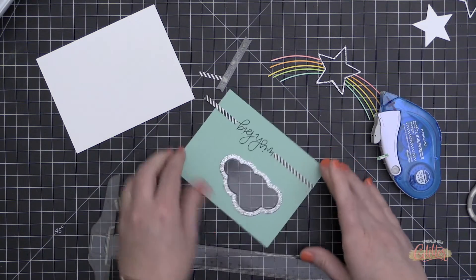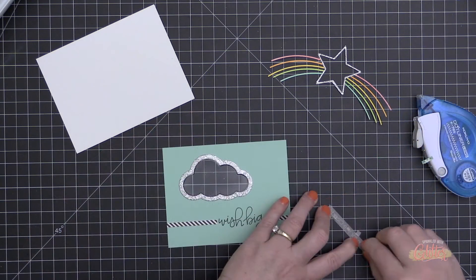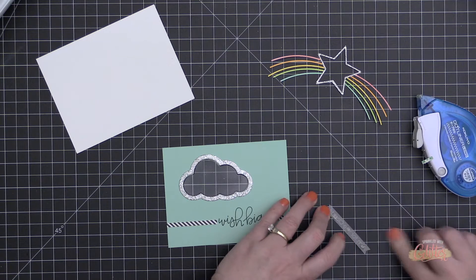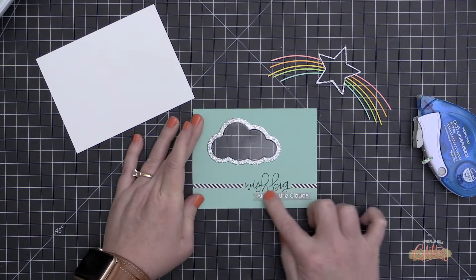I'm just using the black and white striped pattern paper from My Favorite Things. It's a 6x6 paper pad, and I'm putting a small strip of that across my card front, kind of skipping the area where that Wish Big is stamped.